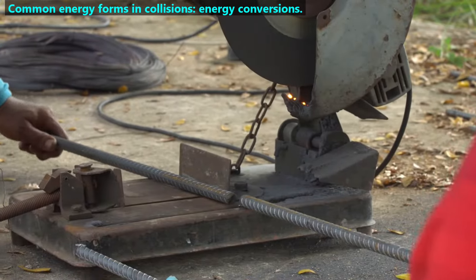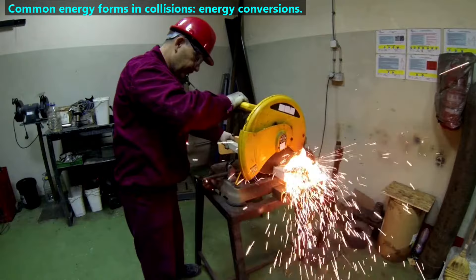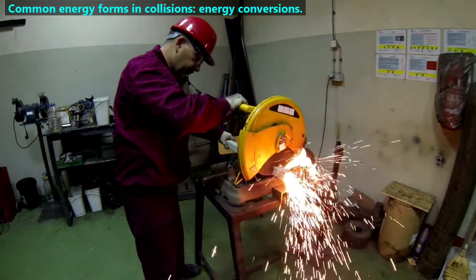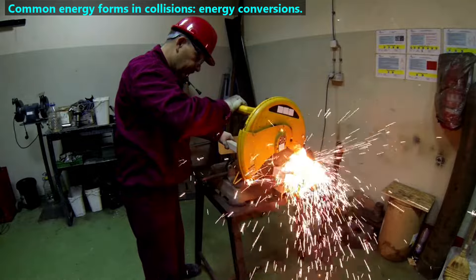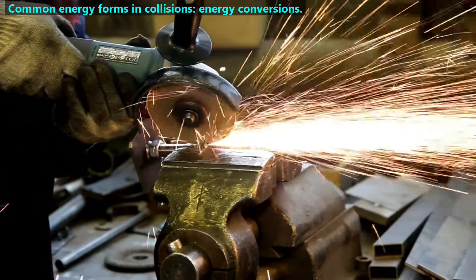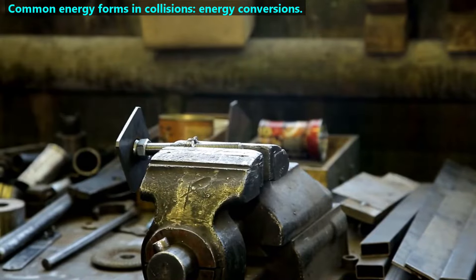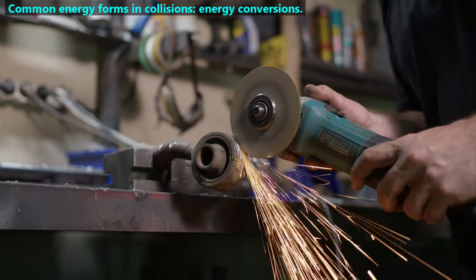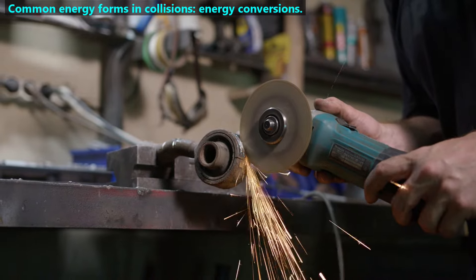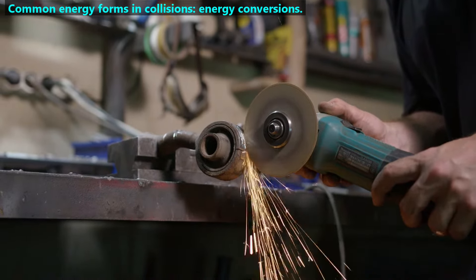For example, a saw blade rotates fast so has a lot of kinetic energy. But when it contacts metal, some of that kinetic energy is converted into sound energy. Some of the blade's kinetic energy is converted into heat energy, which we can see as smoke. And some of the blade's kinetic energy is converted into light energy because the metal fragments are so hot that they glow.